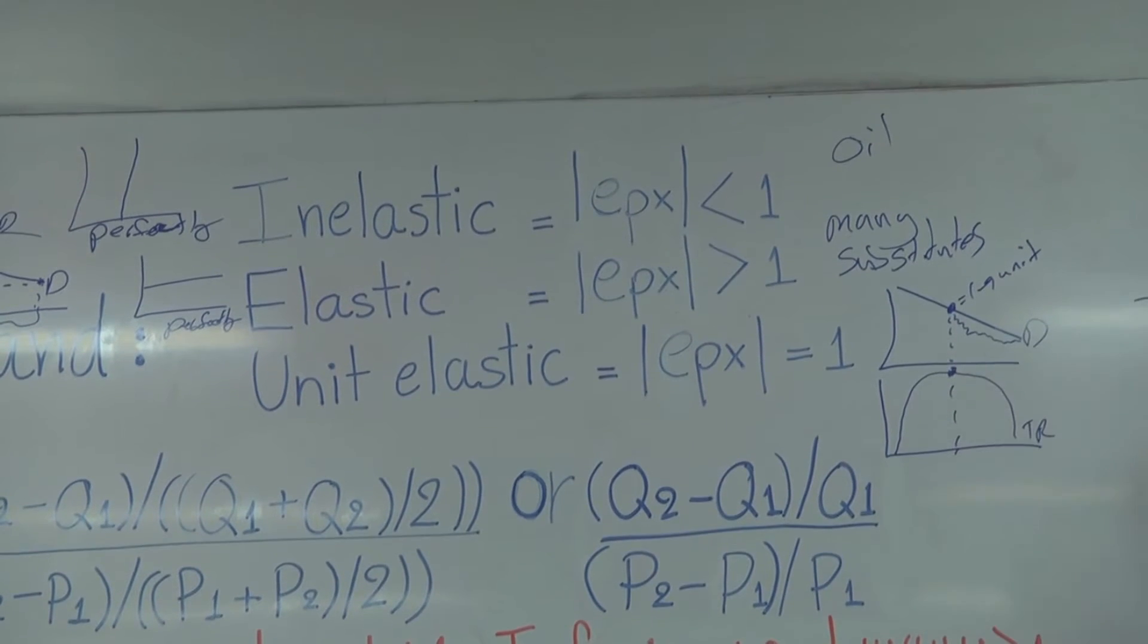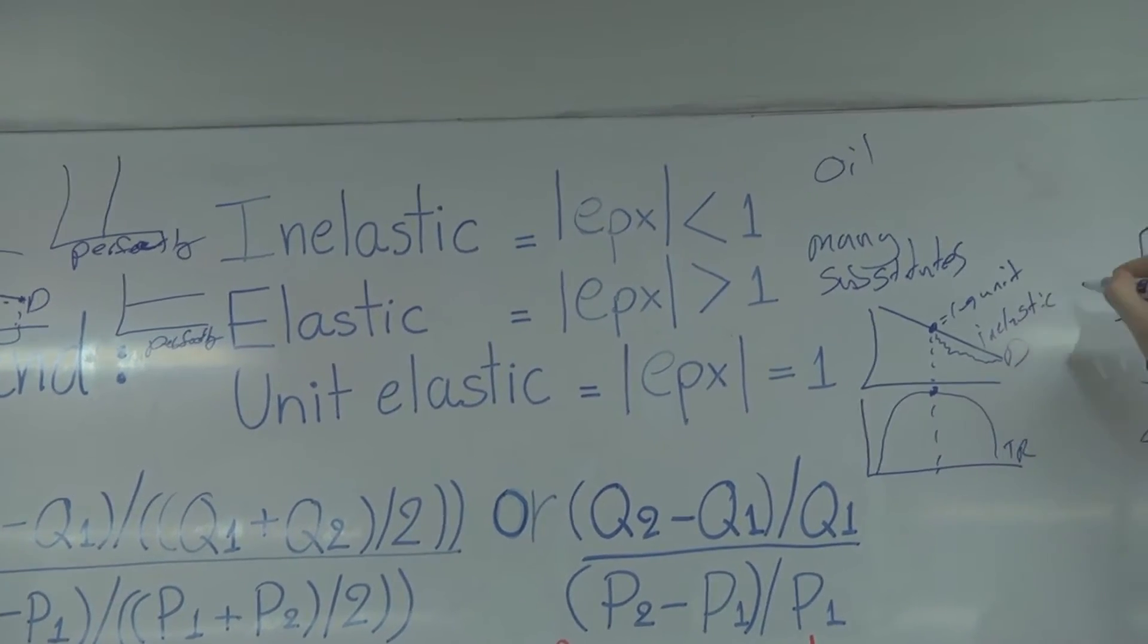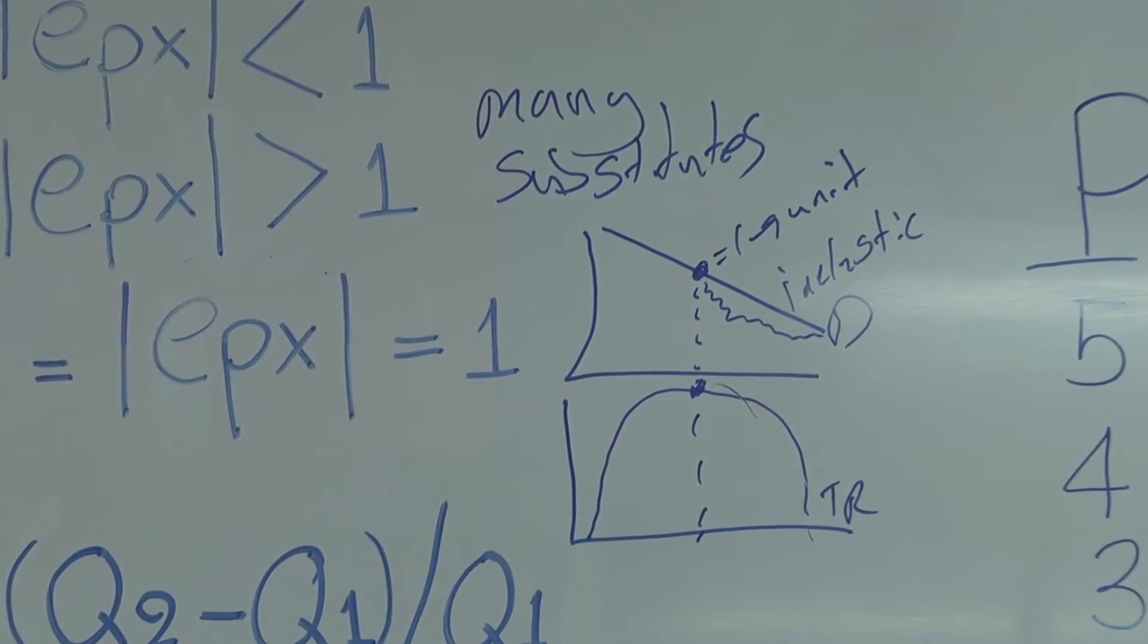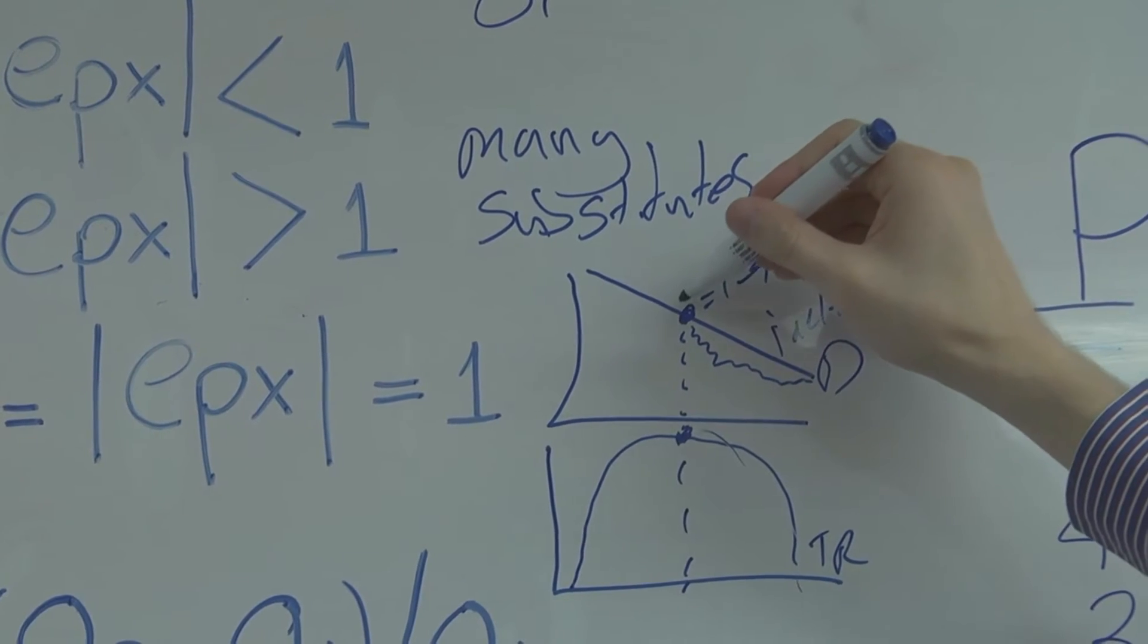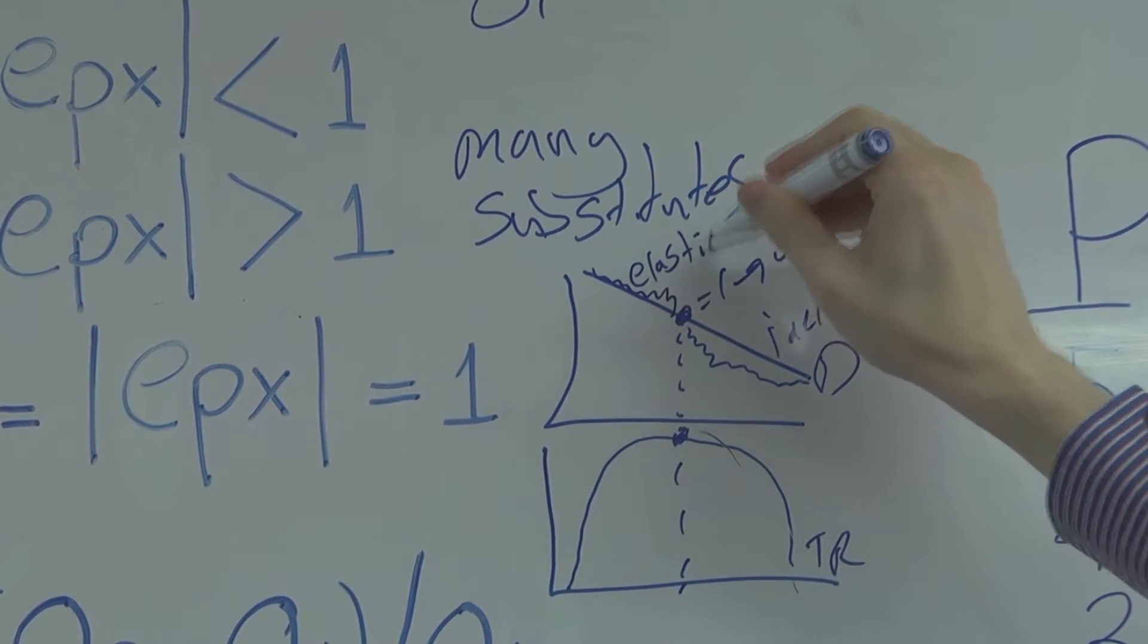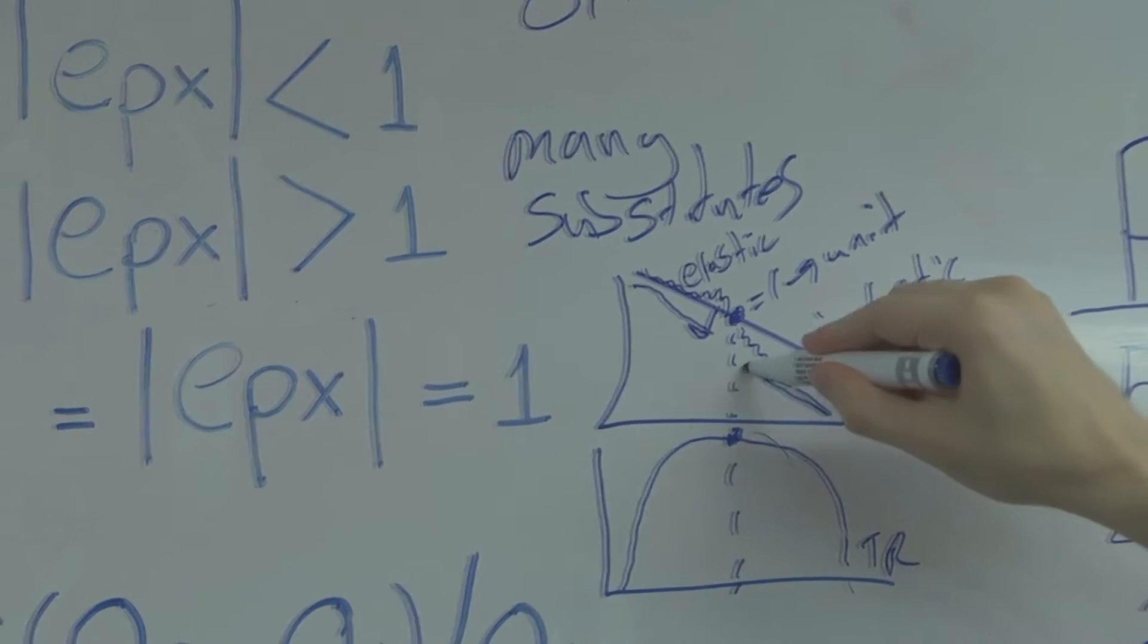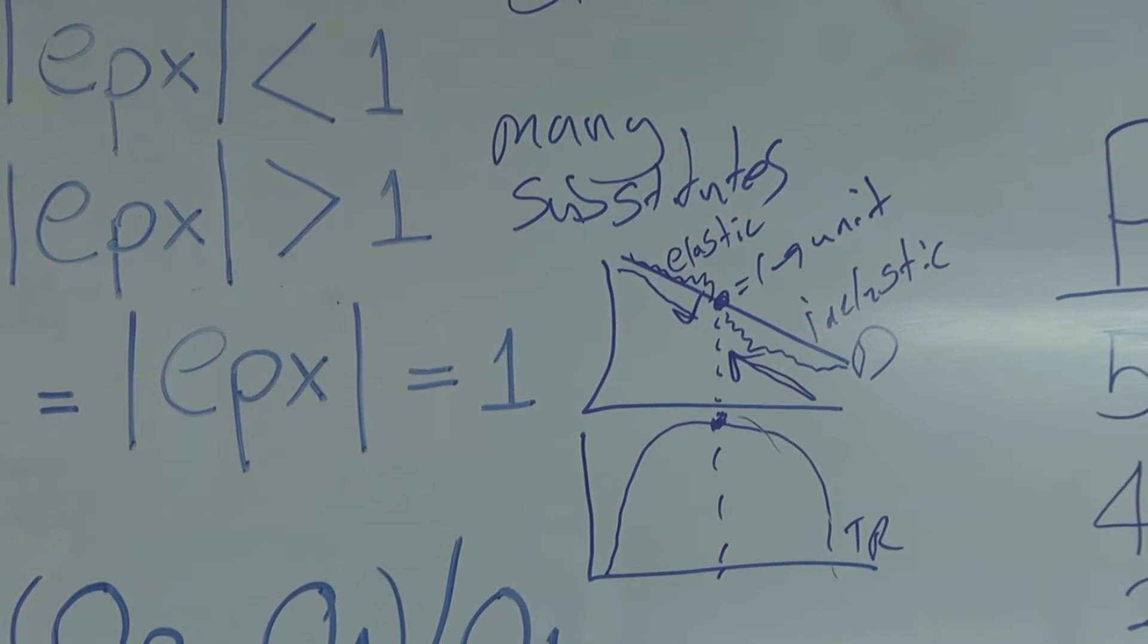This part of my demand curve, this would be inelastic. Meaning I could raise the price and I would increase my total revenue. I would make more money if I raised the price. So if it's inelastic, we want to raise the price to make more money. And then anything above this dot, I would be elastic. Meaning I would want to lower the price and I would make more money. And inelastic, I want to raise the price and I'll make more revenue, more money.